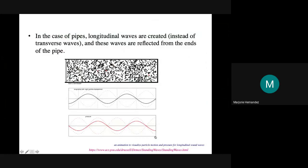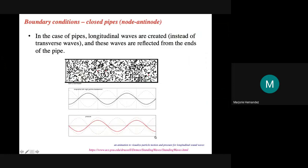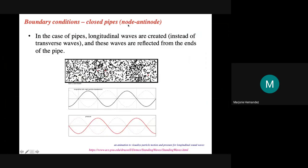There are other boundary conditions. The next one is with pipes. We have two conditions for pipes: closed pipes and open pipes. For a closed pipe, one end is a node and one end is an antinode. Before we discuss that, let me show you what is actually happening inside the pipe.